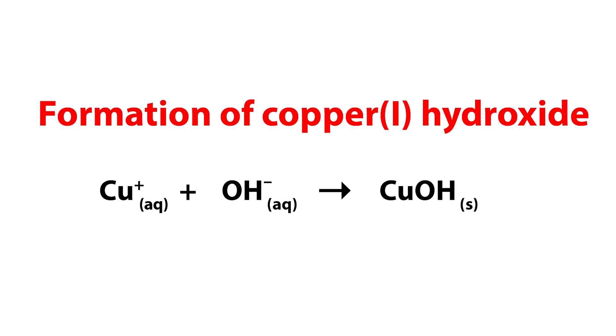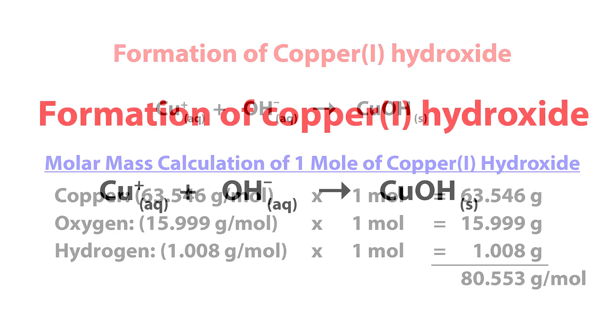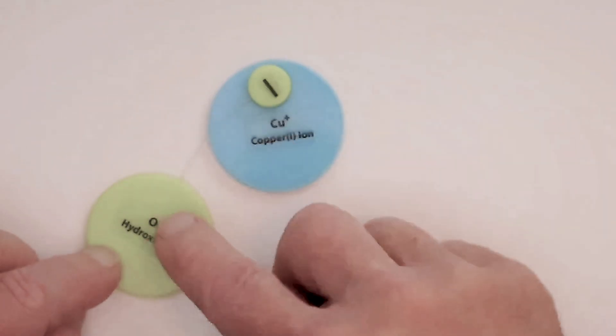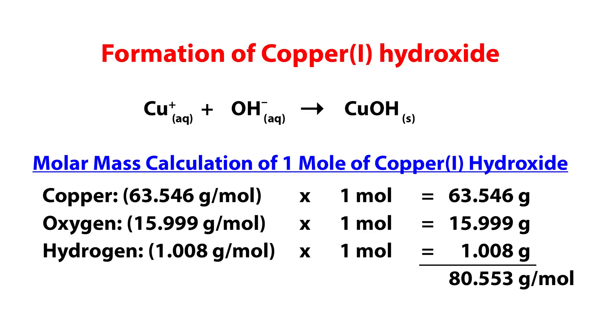Now if you look at this, to figure out the molar masses it's really straightforward. There's going to be one copper, one oxygen, and one hydrogen. You can see that in the molar mass formula: 63.546, and almost 16, and 1, and it adds up to a total of 80.553. Bear in mind this is with three decimal places, so chances are you're not going to have that many, and you may have a slightly different answer — that's a rounding error.